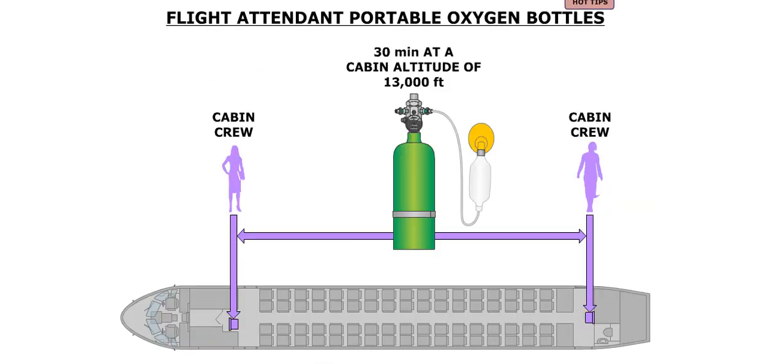Two portable oxygen bottles are stowed under the cabin attendant seats. These bottles are equipped with a diluter oxygen mask. Each bottle will supply a continuous diluted flow of oxygen for up to 30 minutes at a cabin altitude of 13,000 feet.